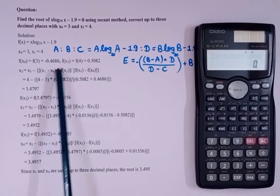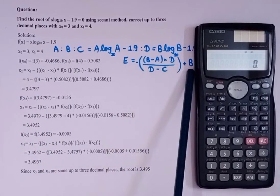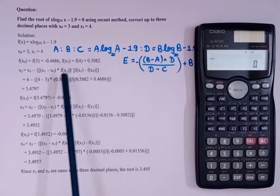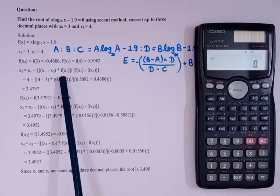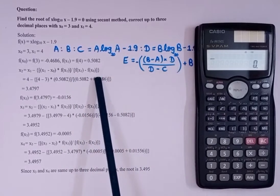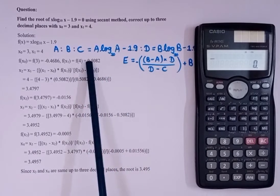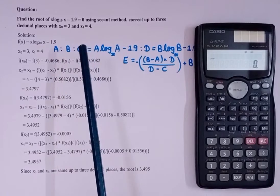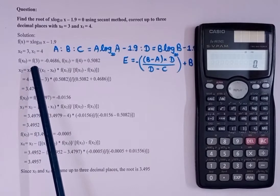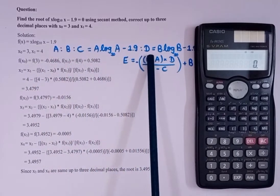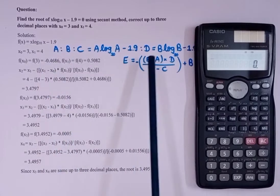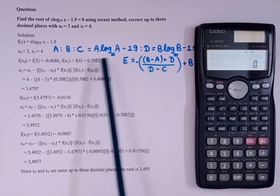As I told you, x₁ is b. So the iteration formula becomes: b minus (b - a) times f(x₁), which is d, divided by (f(x₁) - f(x₀)), which is d minus c. Here c is a·log(a) - 1.9, that is f(x₀) with x₀ = a, and d is b·log(b) - 1.9, that is f(x₁) with x₁ = b.